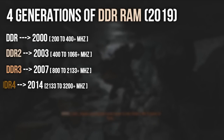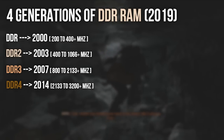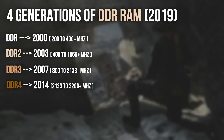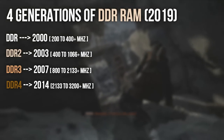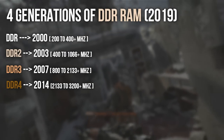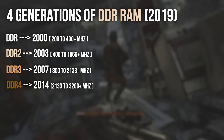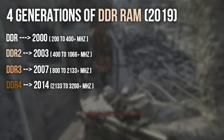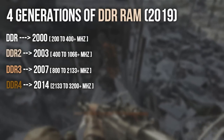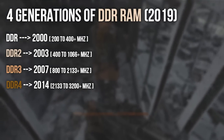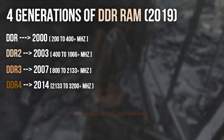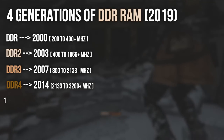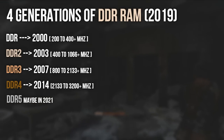AMD was offering nothing competitive in gaming performance back then. DDR4 is the latest generation currently available and was released in 2014. DDR1 to DDR2 took three years, DDR2 to DDR3 took four years, and DDR3 to DDR4 took seven years — once again due to market stagnation. As for DDR5, it was expected to release in 2021.